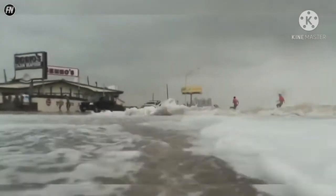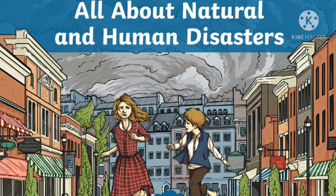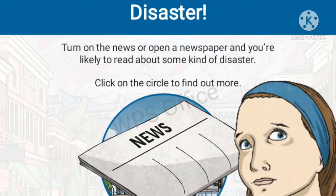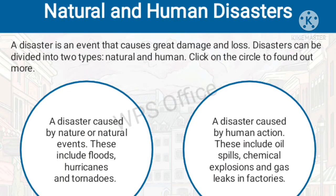Hello, welcome back. You can see that the clips we watched were all about natural and human disasters, or you can say man-made disasters. On the news on a daily basis, we hear about disasters. A disaster is a sudden event that causes great damage or loss of life. So, disasters caused by nature include floods, hurricanes and tornadoes.